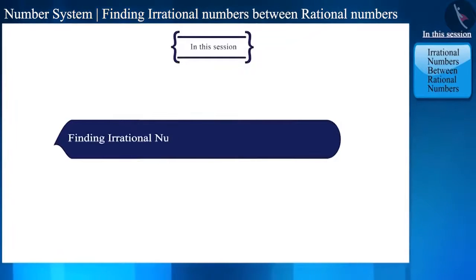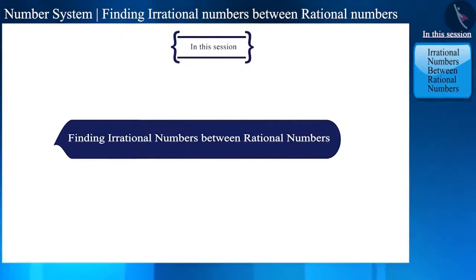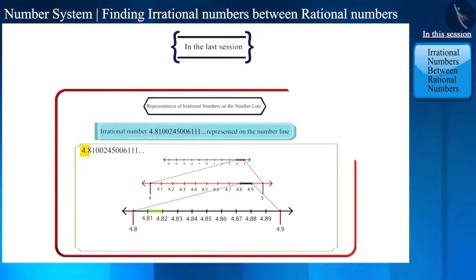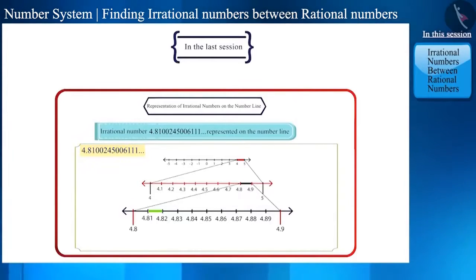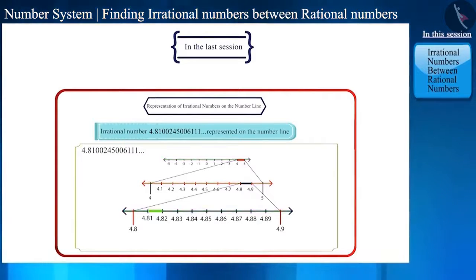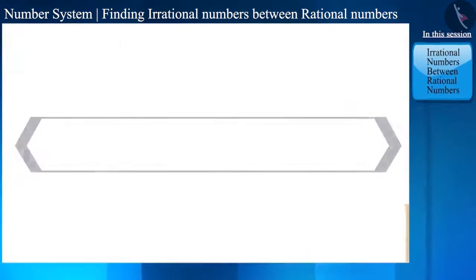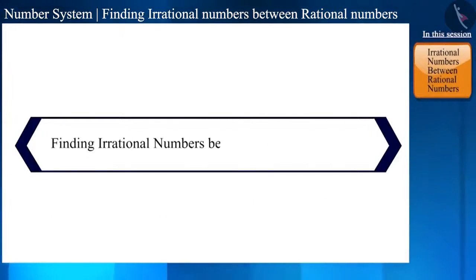In this video, we will learn to find irrational numbers between rational numbers. The digits after the decimal of irrational numbers are infinite and non-repeating, so it is difficult to represent them on the number line. But we can definitely tell between which two numbers an irrational number is located. Let's take an example and see how to find irrational numbers between two rational numbers.